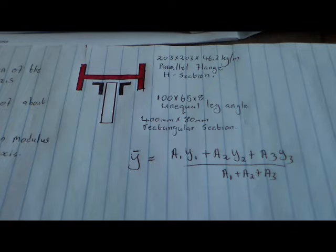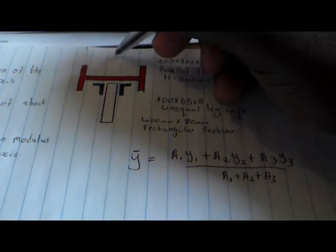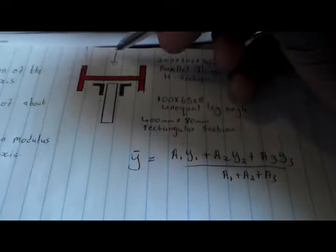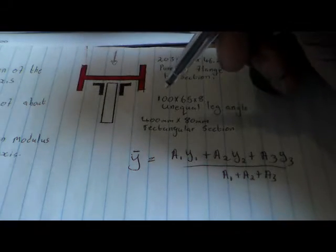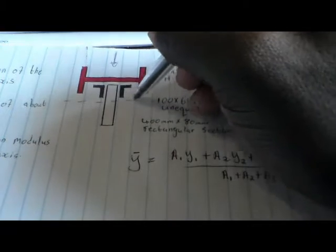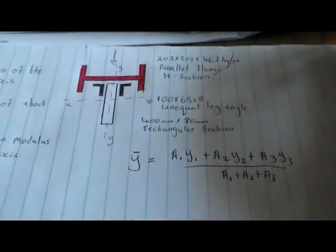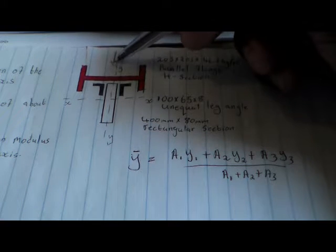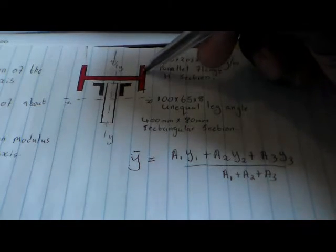In this case, ladies and gentlemen, we have to calculate the position of the neutral axis, or else we can say the centroid of this beam. So this is a build-up beam. You have to always take in mind that the force on the beam will always be in this direction. So if we are applying a force here in this direction, that means the beam will be turning on the X axis. Let's say this is our X axis and in the middle here, this is our Y axis.